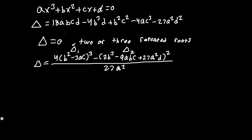The cubic has two minor discriminants that are both part of the general main discriminant. One key property: if Δ₁ = 0, then Δ₂ = 0 as well. Let's verify this with the cubic x³ + 3x² + 3x + 1 = 0.